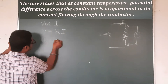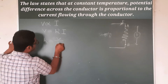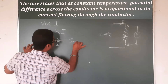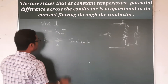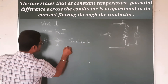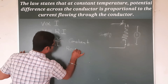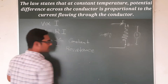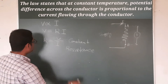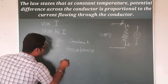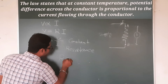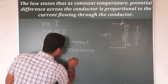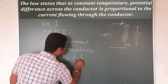R is a constant term — this is called resistance. Resistance can also be expressed as R is equal to rho L by A.